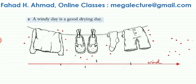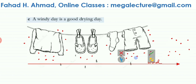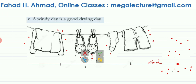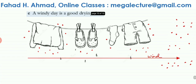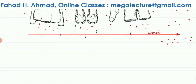Once the evaporated water molecules are carried away by the wind, more water molecules can evaporate from the clothes — the speed of evaporation increases. The previous evaporated particles are now gone, so more particles from the wet clothes can evaporate. The wind repeats this process continuously, carrying evaporated particles away, which speeds up the drying process.